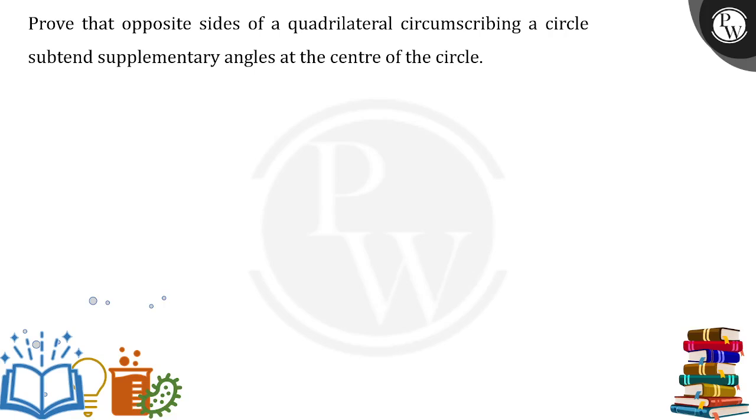In this, we have to prove that the opposite sides of a quadrilateral circumscribing a circle subtends supplementary angles at the center of the circle.